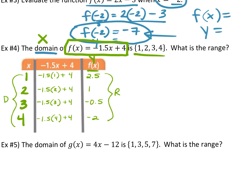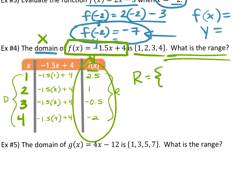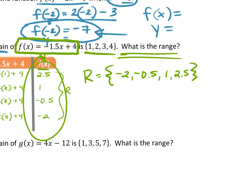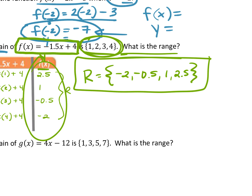The range — how do we write a range? In order, least to greatest, no repeats. So your range is negative 2, negative 0.5, 1, and 2.5. When they ask you for a range, put it in brackets, put them in order. If they give you the domain like this, they want the range the same way — in order, no repeats.